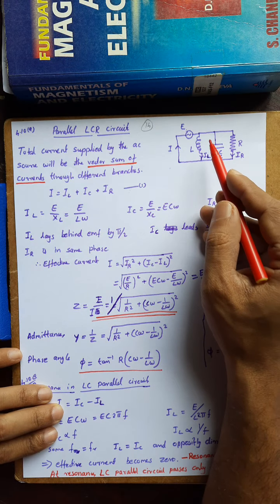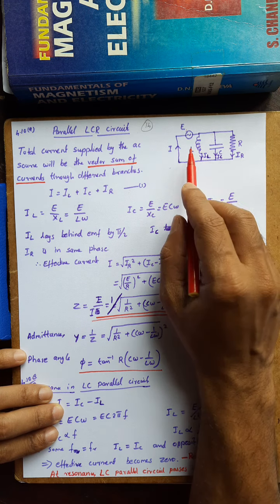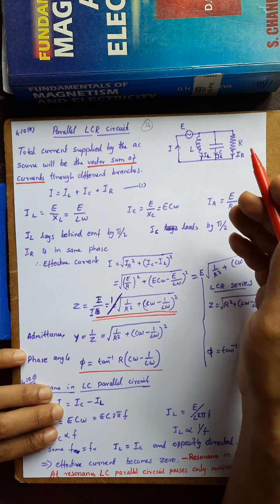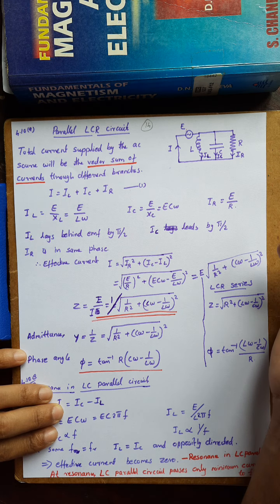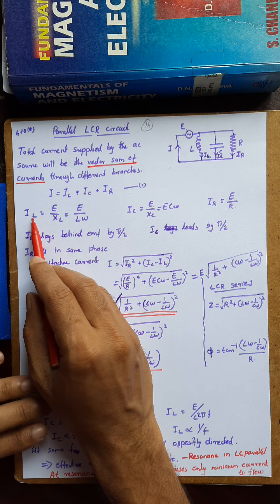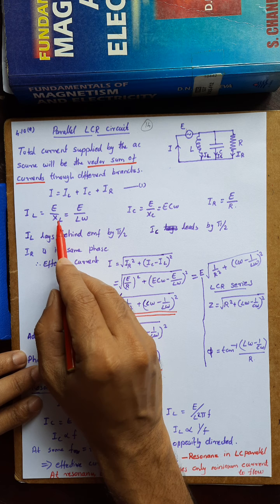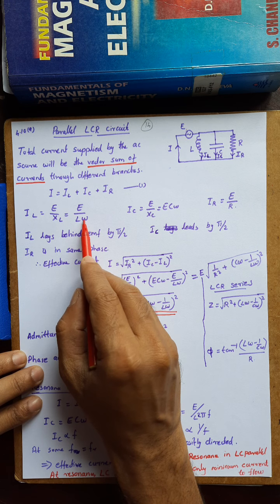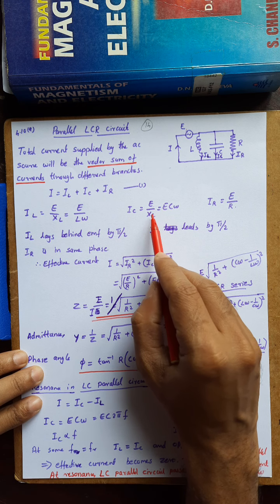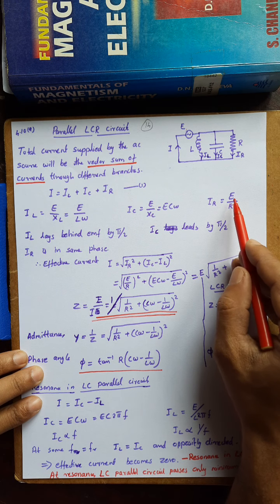Vector sum means we want to take into account the direction of current flow, because different components have different phase lags and phase differences. Current through inductance IL is EMF divided by inductive reactance XL, where XL equals L·omega. Similarly, current through capacitance is E divided by XC, where XC equals 1/(C·omega), so IC equals E·C·omega. Current through resistance is E divided by R.